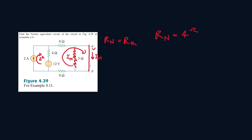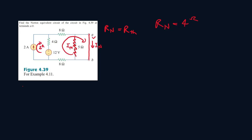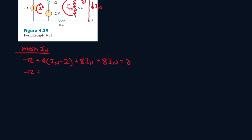So for mesh I_N, it'll be minus 12 plus 4I_N minus 2 plus 8I_N plus 8I_N equals 0. So it'll be minus 12 plus 4I_N minus 8 plus 8I_N equals 0.